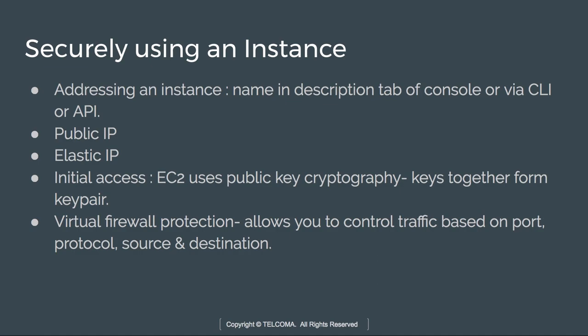For security, DNS name is automatically generated and it cannot be specified by the customer. Public IP persists only when the instance is running. Elastic IP is reserved independently and associated with the EC2 instance, meaning it will persist until the customer releases it.